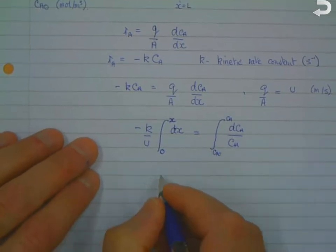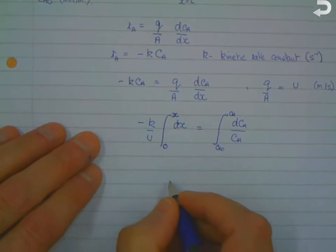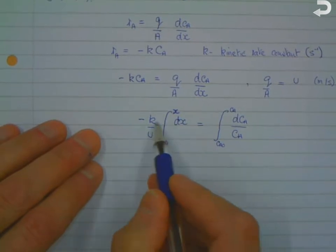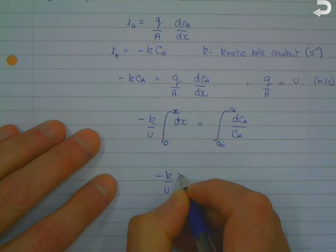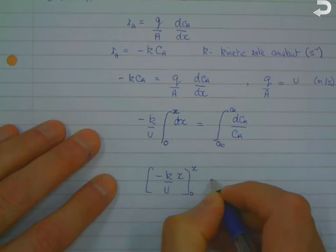So if we do that integration, this side is easy because that's a constant term. We get minus K over U times x between the limits of 0 and x is equal to...